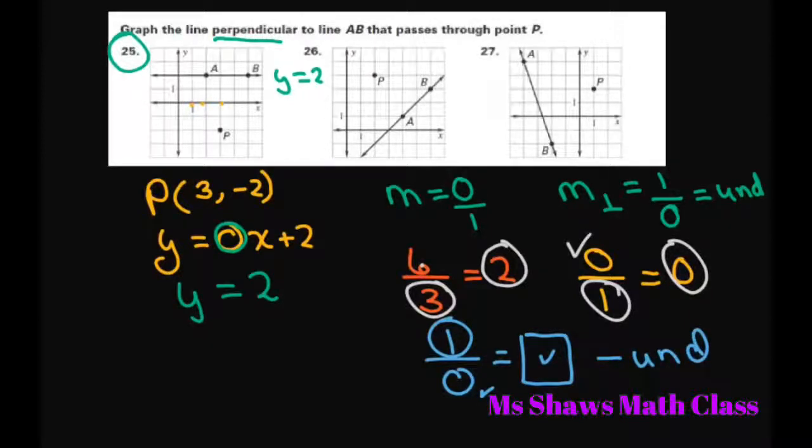So the perpendicular line to a slope with 0 is an undefined line. So that would be a vertical line. In our case, it's just this vertical line. It's not a function. And that would be your slope there. And this line would be called x equals whatever your x is, 3.